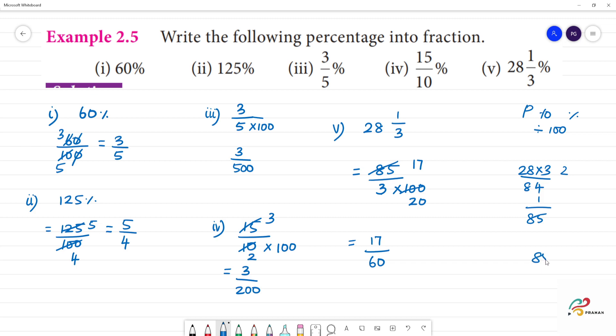Here is 17. 85 divided by 5 - 1, 5s are 5, remainder 3. 35, 7 fives are 35. Clear? That's why this 5 is divided by 5. 17 by 60. This is the answer.